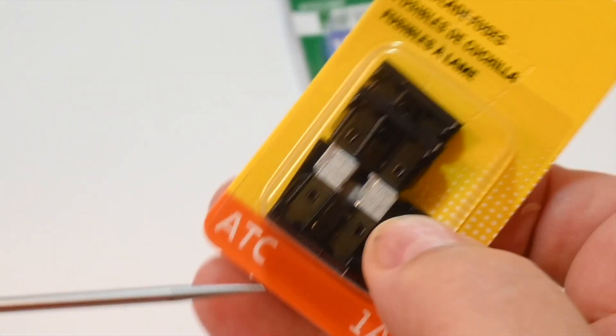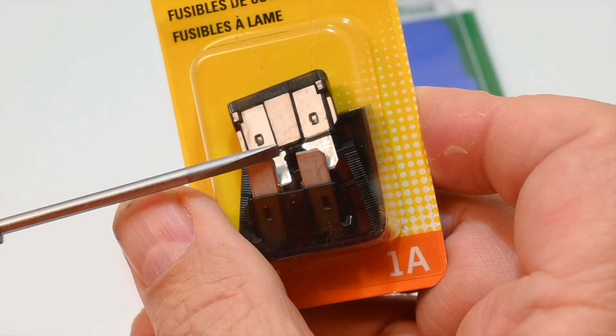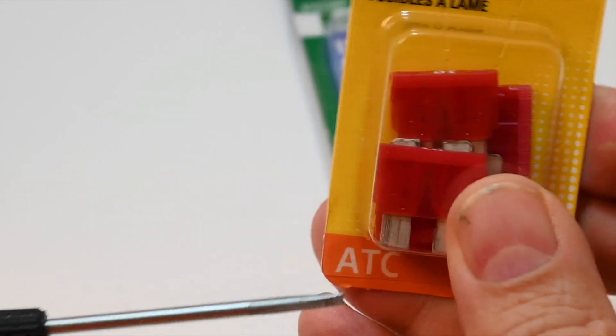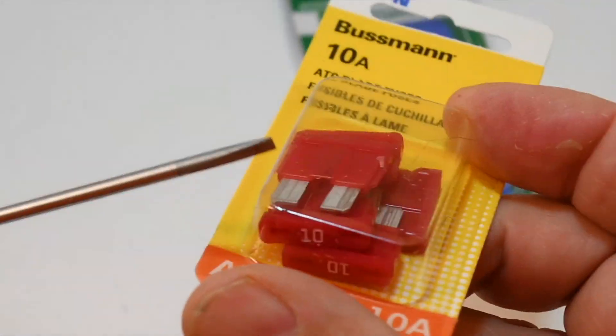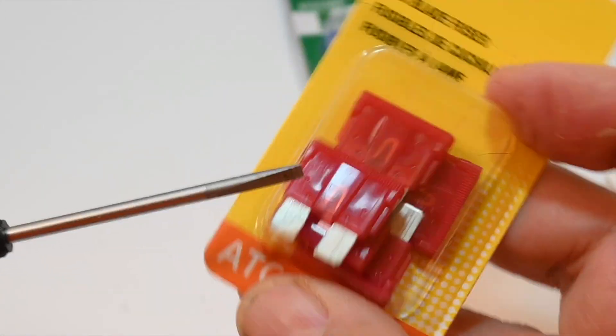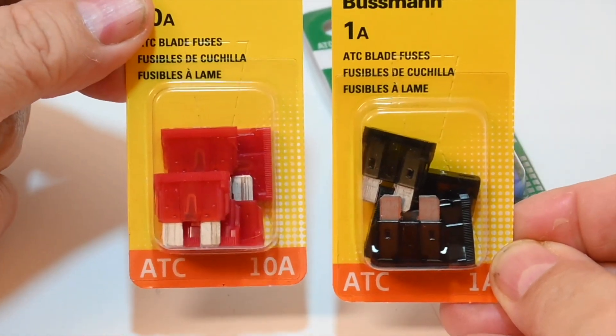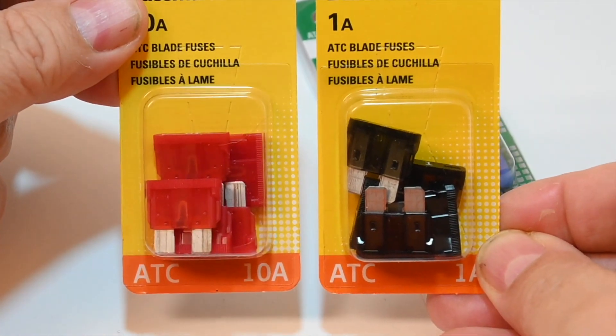This Bussman fuse says ATC. This happens to be a closed fuse and the body is made out of polycarbonate. However this Bussman ATC fuse is made from nylon and has an open bottom. So here we go we have a Bussman ATC fuse with an open bottom and one with a closed bottom.